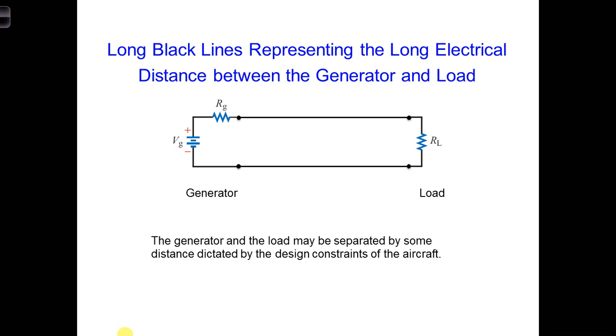As a result, this diagram probably represents our situation in the airplane more closely. Long black lines representing the long wires extending all the way from the cockpit to the fuel tank. Under what conditions do you think it would be important to account for these long black lines representing the length of the wires?